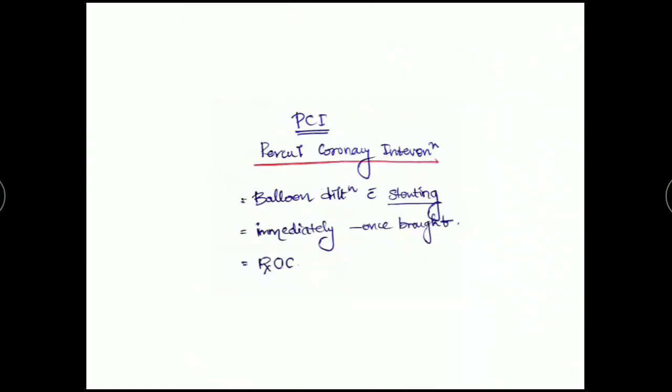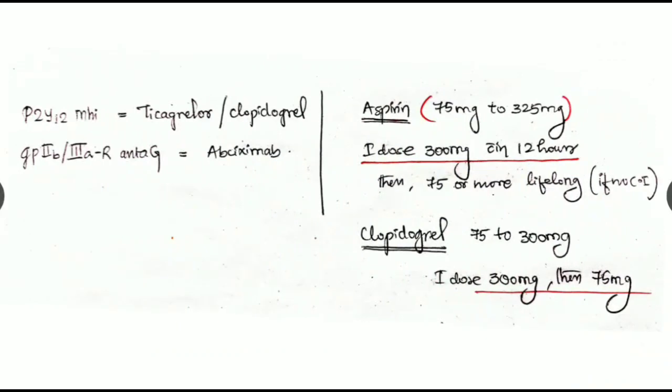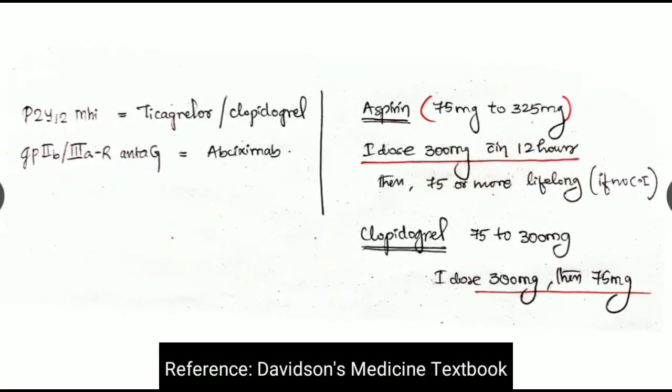More about the PCI percutaneous coronary intervention: it is a balloon dilatation with stenting. It is done immediately once the patient is brought with symptoms and it is the treatment of choice. Once again reminding you with the dosage: aspirin we have to give around 75 to 325 mg with the first dose being 300 mg stat within the 12 hours of presentation, then followed by 75 mg or more lifelong therapy if it is not contraindicated. Regarding clopidogrel, the same dosage of 75 to 300 mg with the first dose being 300 mg stat, then followed by 75 mg lifelong.